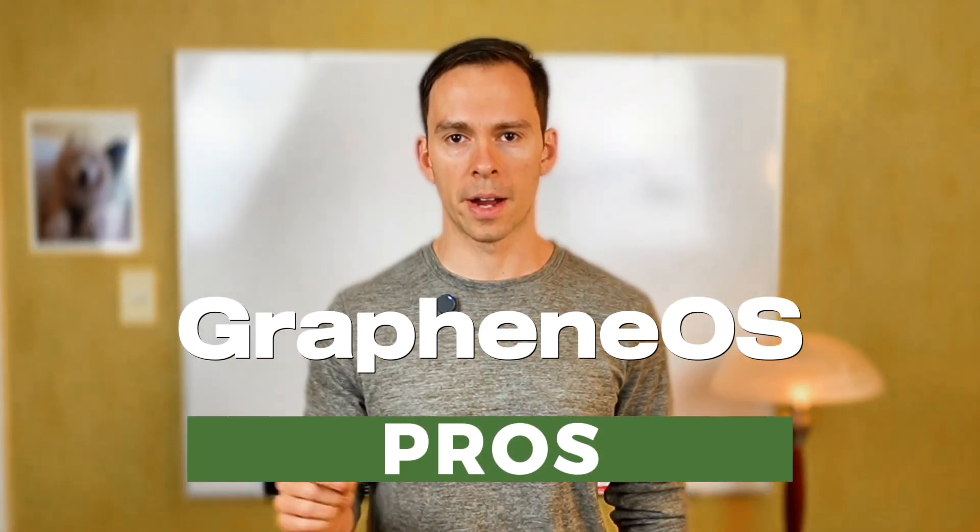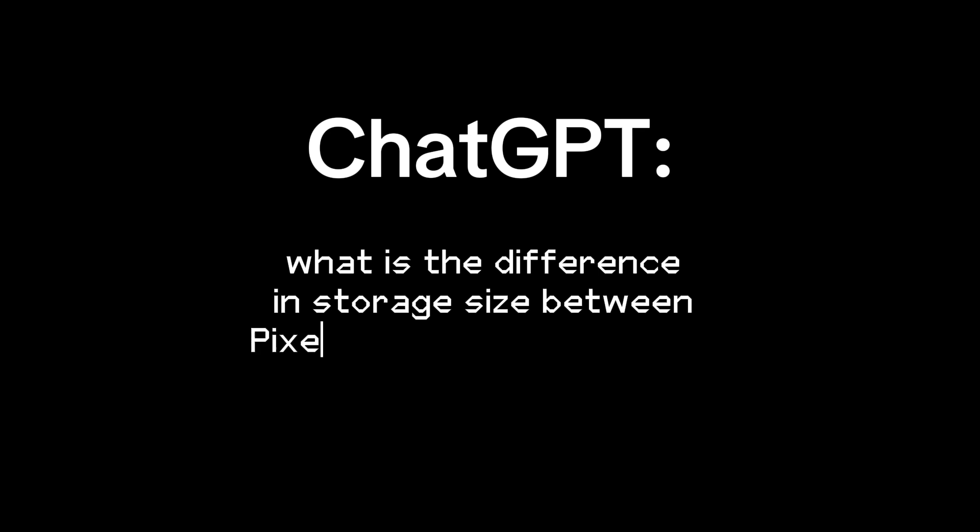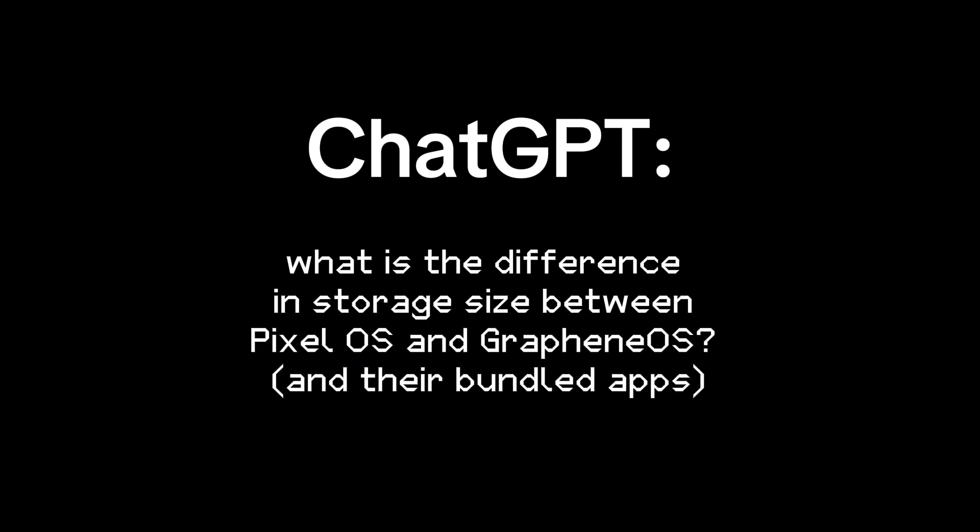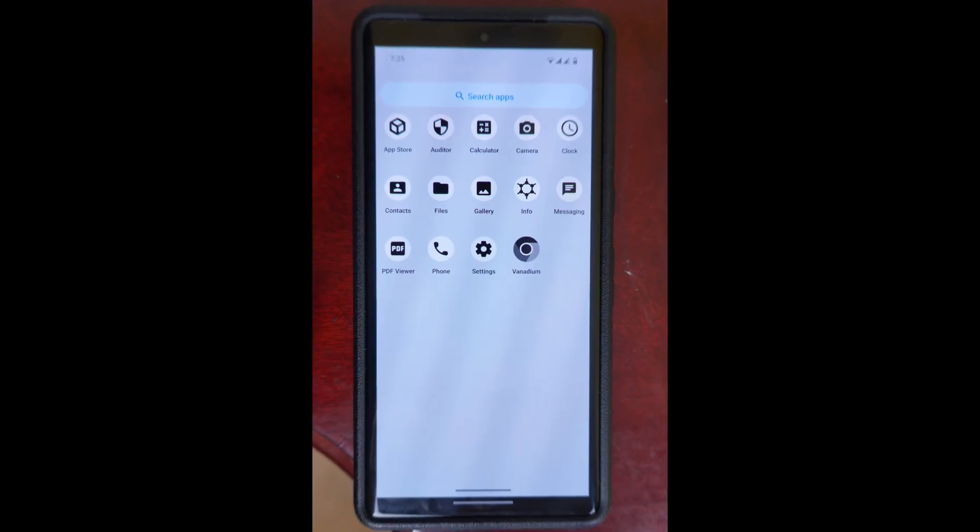Things I like about GrapheneOS. The first big benefit of switching was that it freed up storage space on my phone. I asked ChatGPT what the difference is between the Google Pixel Android OS compared to GrapheneOS. It said the Google Pixel Android OS and its included apps take up about 12 to 15 gigabytes, so out of the box my phone storage was like 10% full just with the OS. GrapheneOS, on the other hand, only comes with 14 very minimal apps and takes up just around three gigabytes for the OS.